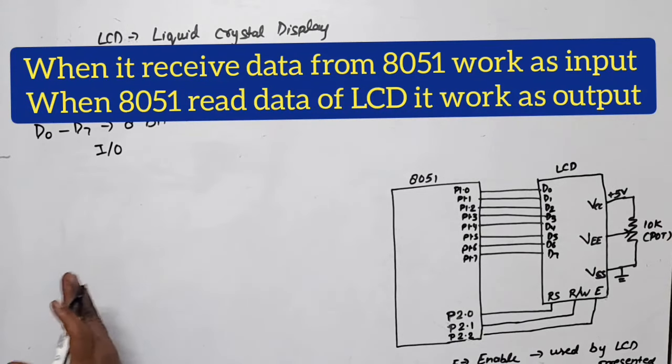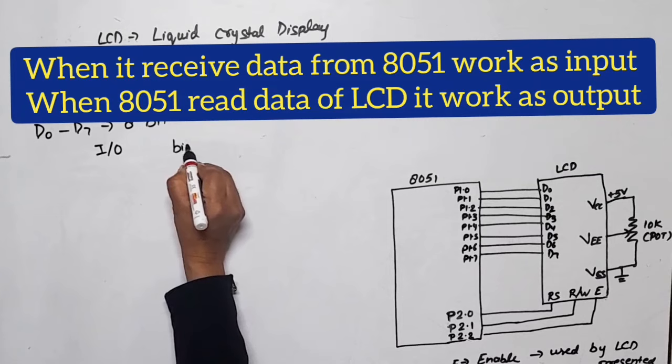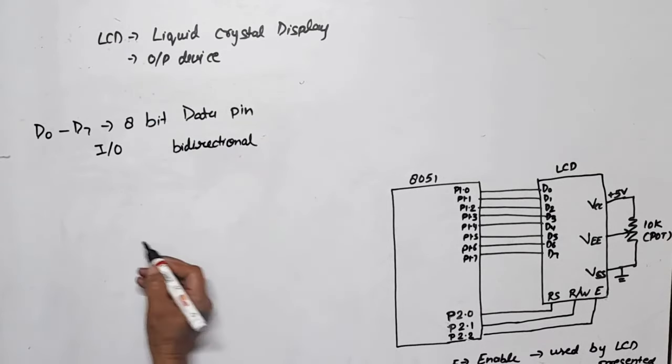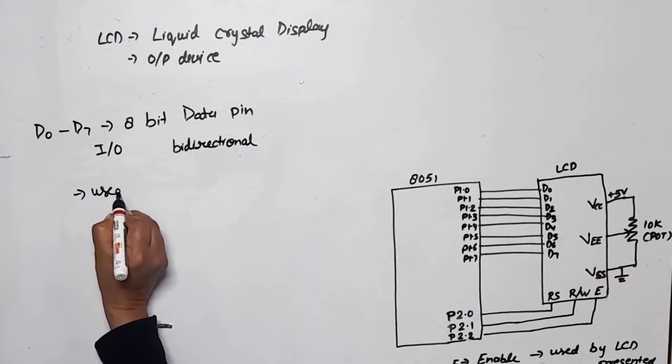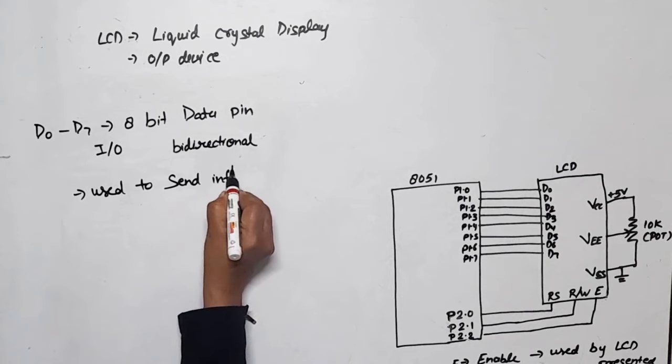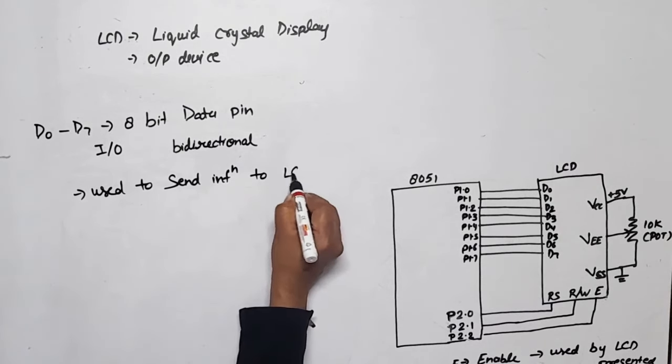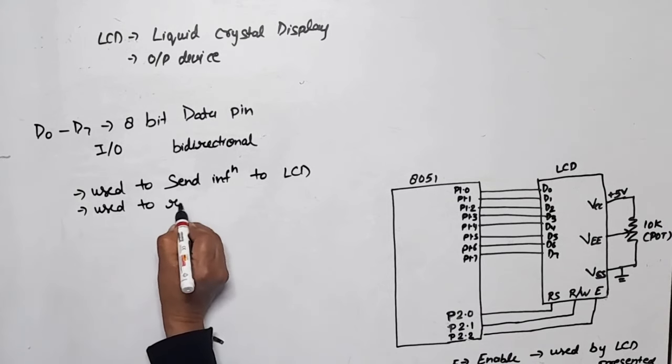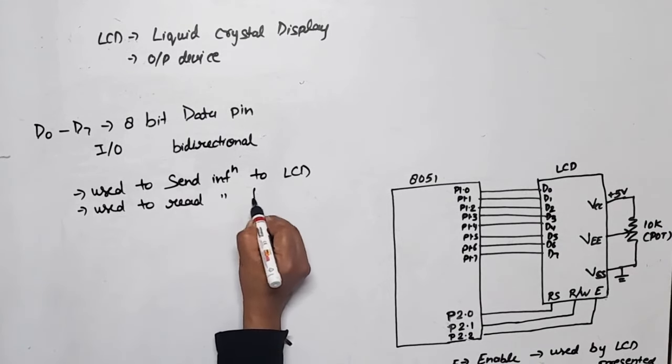Port 1 works as input-output, meaning this is bi-directional. Now what is the function of this? This is used to send information to LCD and used to read data or read information from LCD.